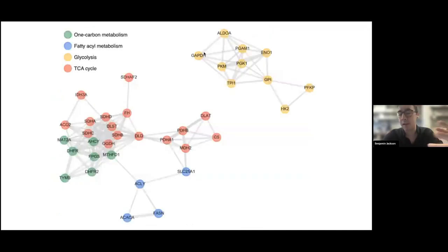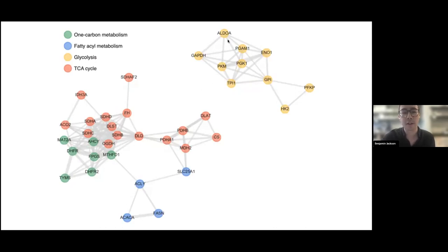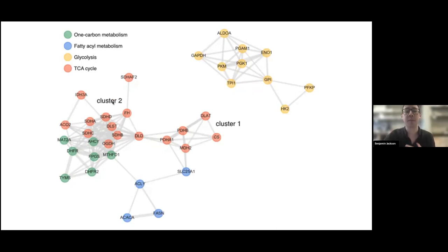The other way to represent this data is in 2D network diagrams where each circle represents a gene, and lines between circles represent the strength of correlations — more highly correlated genes are closer together. Once again, we see the emergence of clusters: a glycolysis cluster, a one-carbon cluster, and the TCA cycle again split into two distinct clusters. This was quite surprising, so we wanted to understand specifically what genes are contained in each of these different TCA cycle clusters.